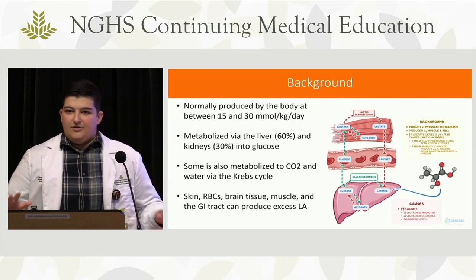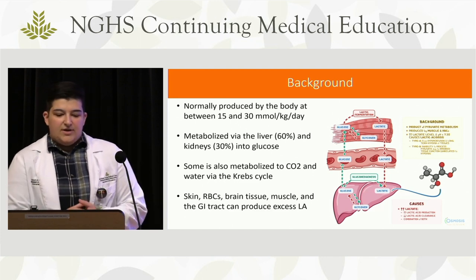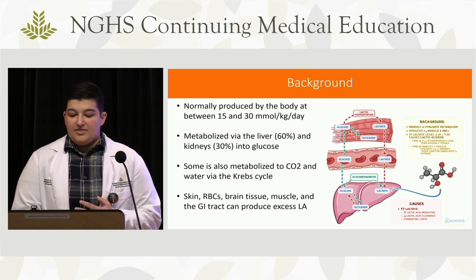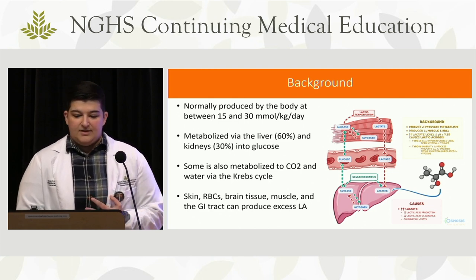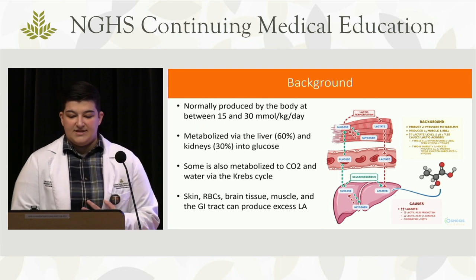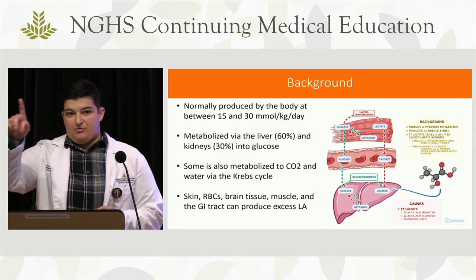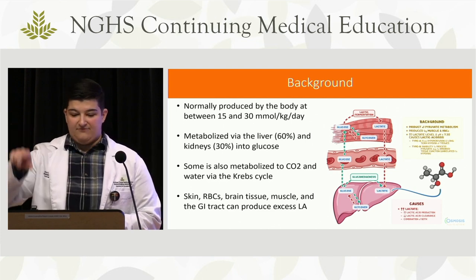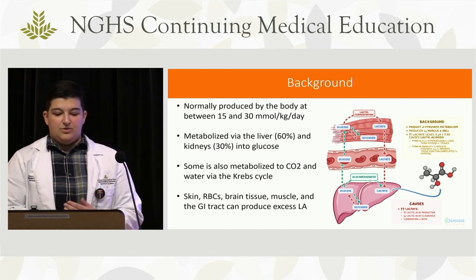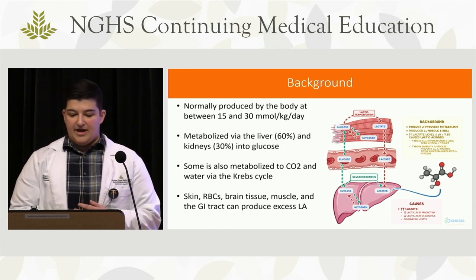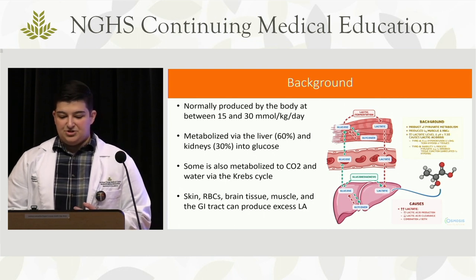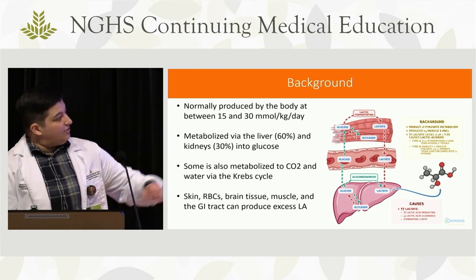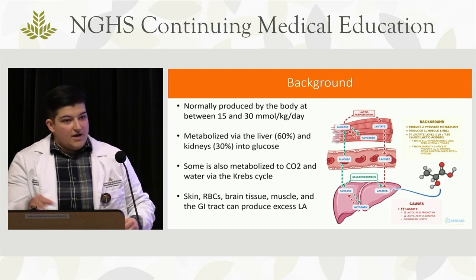Lactate is normally produced by the body anywhere from 15 to 30 millimoles per kg per day. The liver does most of the metabolism — about 60% — and the kidneys also metabolize it, converting it into glucose. Some of it is also metabolized into CO2 and water via the Krebs cycle. The skin, red blood cells, brain tissue, muscle, and GI tract are the ones we really look at when they produce excess lactate.